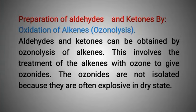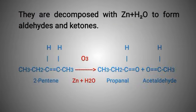Preparation of aldehydes and ketones by oxidation of alkenes — ozonolysis. Aldehydes and ketones can be obtained by ozonolysis of alkenes. This involves the treatment of alkenes with ozone to give ozonides. The ozonides are not isolated because they are often explosive in dry state. They are decomposed with zinc plus water to form aldehydes and ketones.